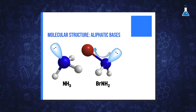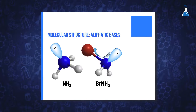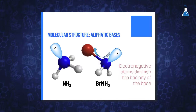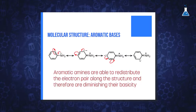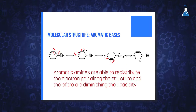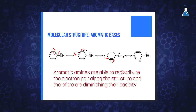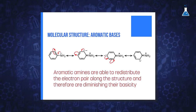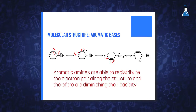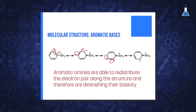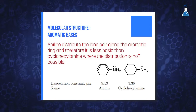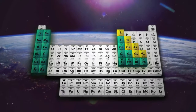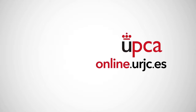The base strength can also be influenced by the presence of electronegative elements in the base. For example, if we compare ammonia with bromoamine, the presence of an electronegative atom such as bromine will result in a lone pair less available to form a new bond and therefore a less basic compound. Finally, the possibility to redistribute the electron pair along the structure affects the base strength. For example, if we compare aromatic and cyclic amines, we observe that for the former there exists the possibility of distributing the charge through the benzene ring with the contribution of different resonance structures, so the lone pair is less available than in the case of cyclic amines, which makes aromatic amines less basic.